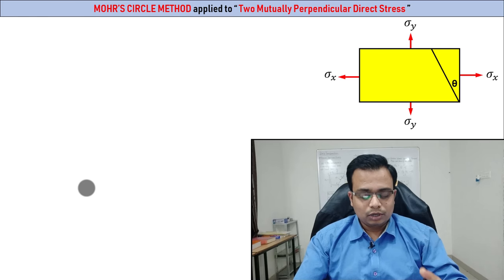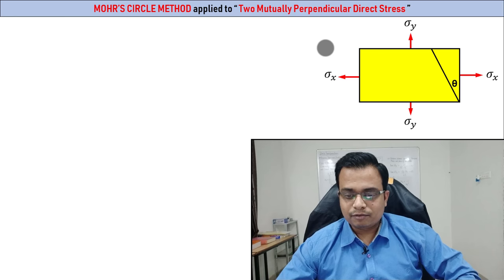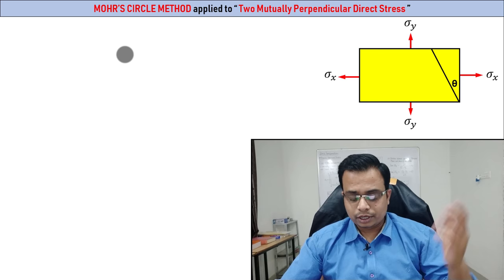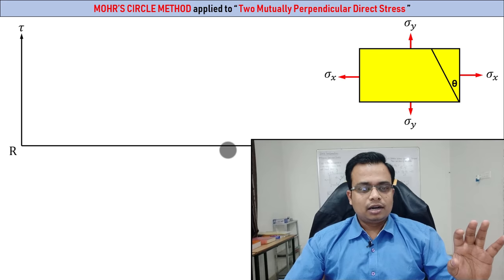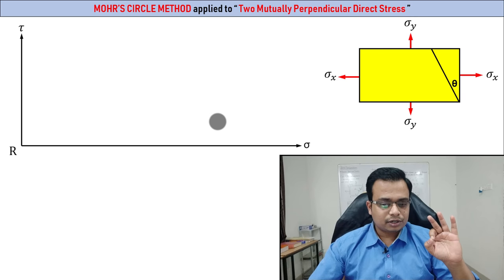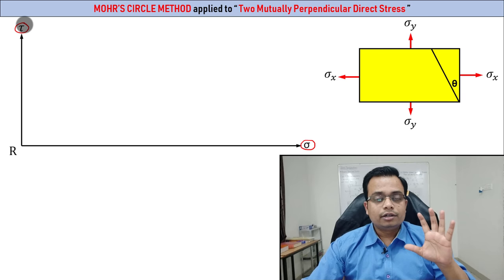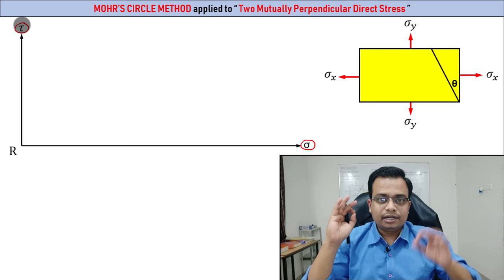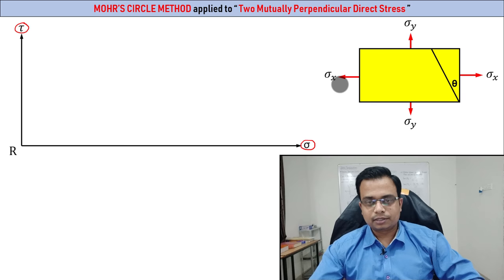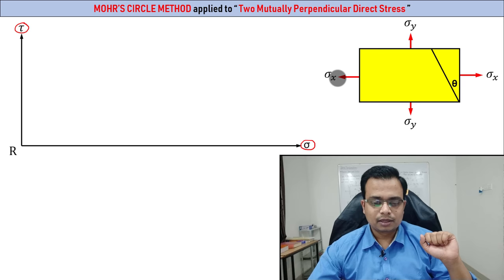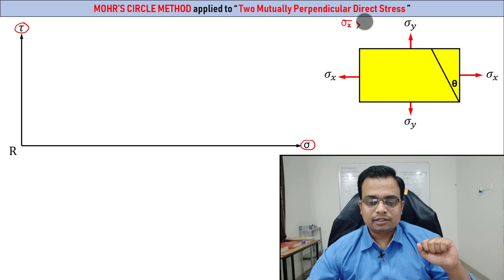So there are two tensile stresses acting, one on each face. Remember: the horizontal line is meant for normal stress and the vertical line is meant for tangential or shear stress. We've got two normal stresses acting on two mutually perpendicular faces. For simplicity, let's assume that sigma_x is greater than sigma_y.